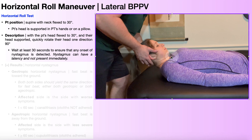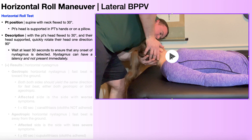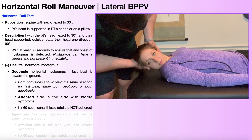Now I'm going to assess the left horizontal canal doing the exact same thing, except rotating in the opposite direction — maintaining 30 degrees of cervical flexion and getting close to 90 degrees of rotation to the left. I'll watch for nystagmus and record its time if present. Another very important thing to monitor is which direction of rotation produced worse symptoms from the patient's perspective, whether rotating right or rotating left was worse, as that helps identify the affected side.